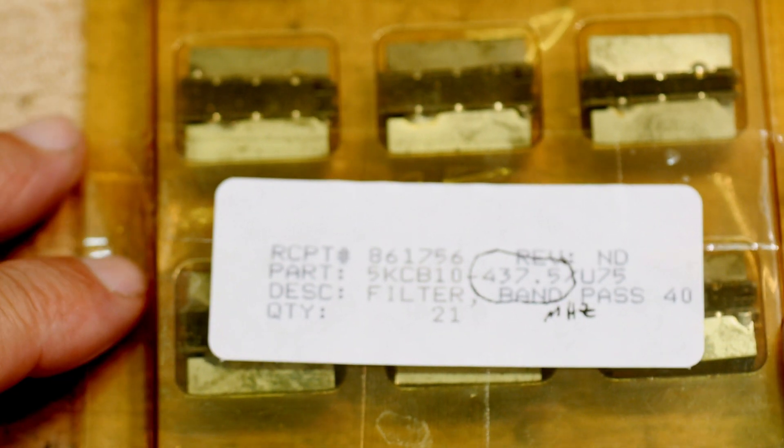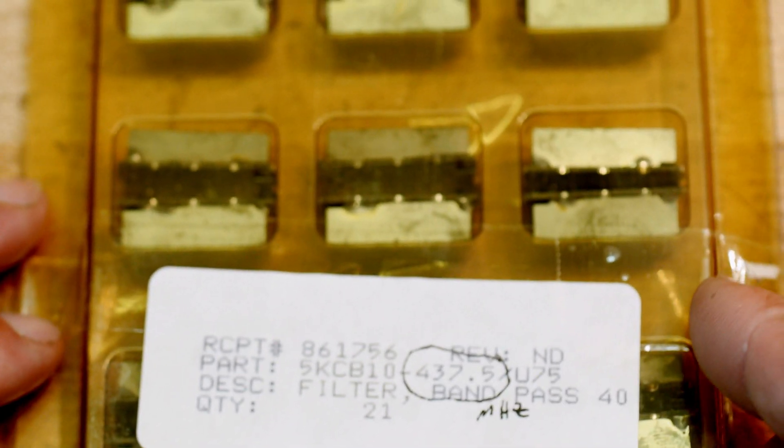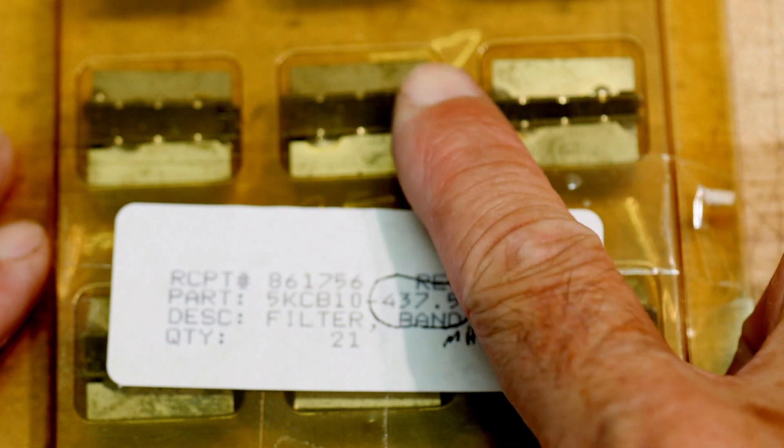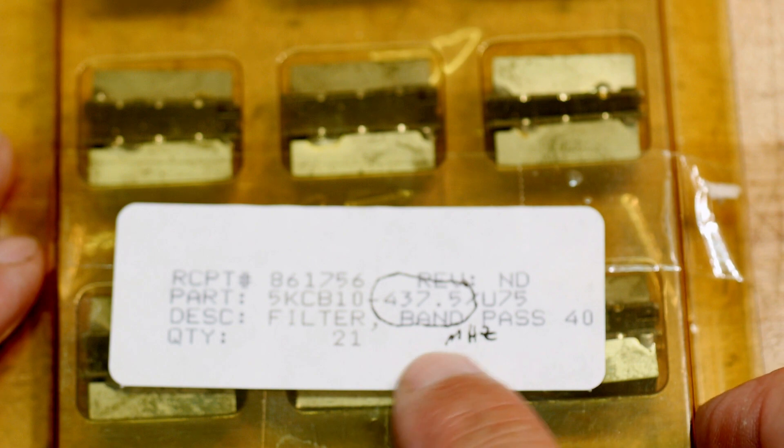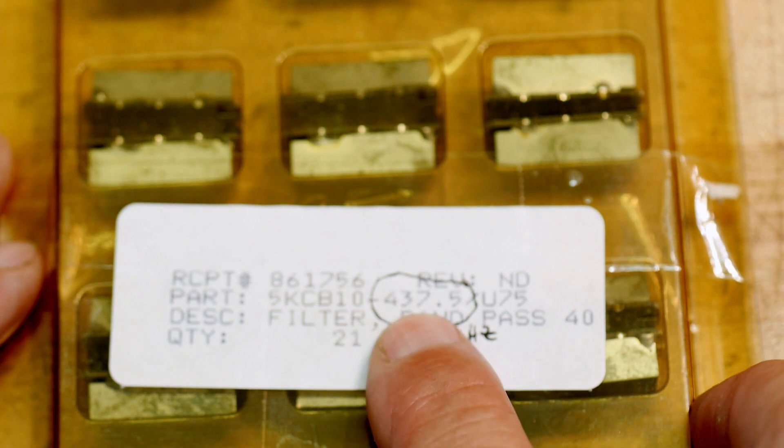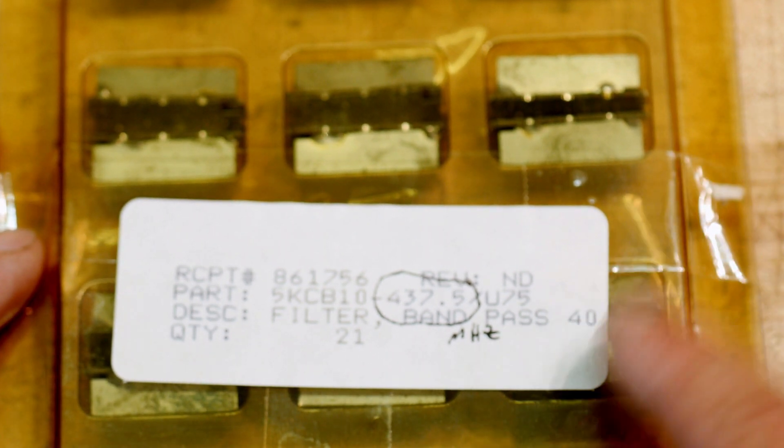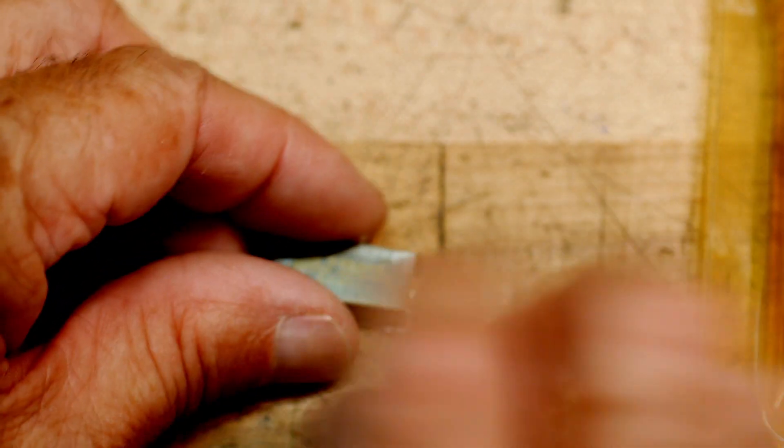Let's look at some filters today. These were sent in by a viewer and they are bandpass filters. I figured out that this number here, 437.5, is the design frequency, so it's a bandpass filter at 437.5 MHz. I don't know how wide it is, but it should be centered on that number.